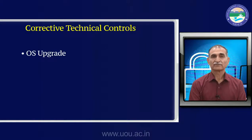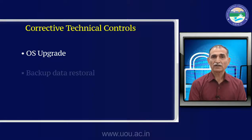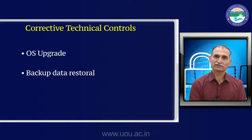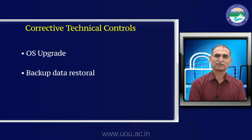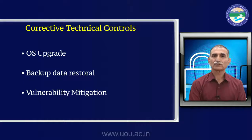Operating system upgrade is one corrective control. The recent ransomware attacks happened because people were still using Windows XP, which had expired 4-5 years earlier — naturally it had vulnerabilities, and attackers exploited them. Backup and data restore is very important — knowing where we are taking backup and from where we restore. This is our lifeline for recovering from total disaster. Vulnerability mitigation: vulnerabilities are discovered gradually, and as and when we come to know about a vulnerability, we need to take corrective action and mitigate it.